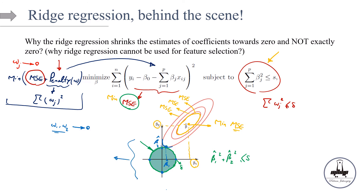In this example, w1 (beta-hat-1) is sent towards zero — it's a small number — while w2 (beta-hat-2) is a larger positive number. That was the behind-the-scenes explanation of how ridge regression sends coefficients towards zero but not exactly equal to zero. In the next video, I'm going to talk about lasso regression and the details of that one. Until the next one, stay safe and take care. Bye.